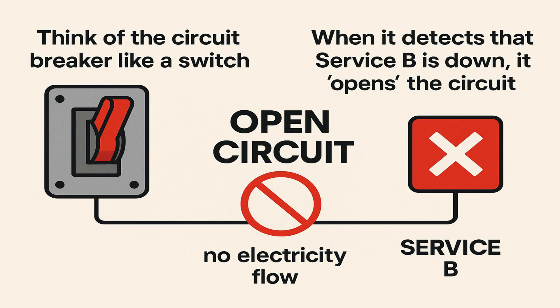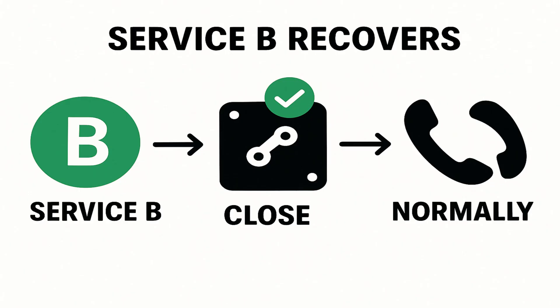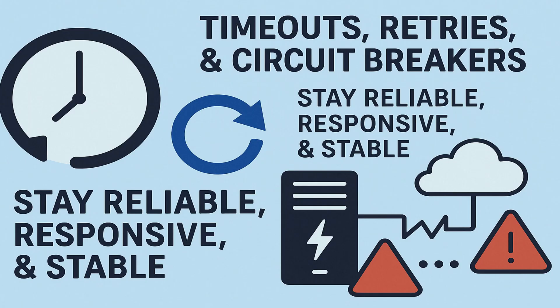It immediately fails any new calls without bothering service B at all. This saves your system resources and stops the problem from spreading. Once service B recovers and is healthy again, the circuit breaker closes the circuit, meaning calls start going through normally again. During the open circuit, we can define a fallback response that will be sent to the caller.